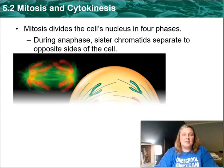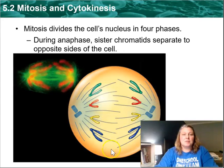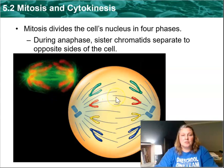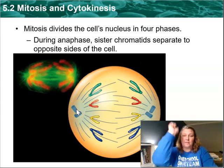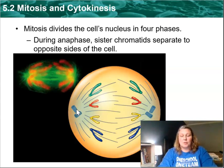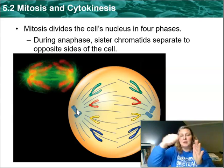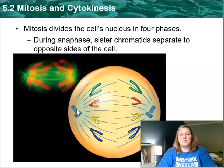Next is anaphase. This is when those sister chromatids separate — 46 chromosomes are going to go this way, and 46 chromosomes are going to go that way. The spindle fibers and the centrioles basically act like a fishing rod: you throw the fishing rod out, it catches onto the fish. You can think of the chromosomes as the fish, and the centrioles pull those chromosomes to each pole.